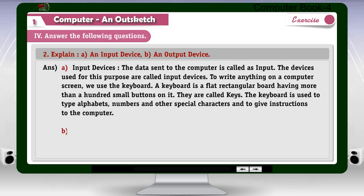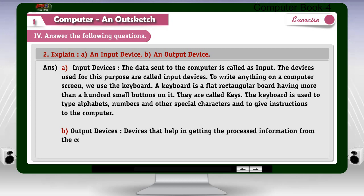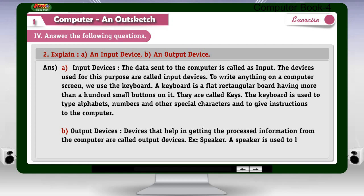Answer B — Output Devices: Devices that help in getting the processed information from the computer are called output devices. Example: Speaker — a speaker is used to hear voice messages or music.